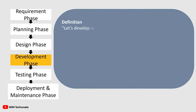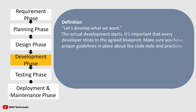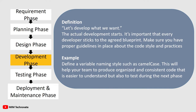Development Phase — Let's develop what we want. At this stage the actual development starts. It's important that every developer sticks to the agreed blueprint. Make sure you have proper guidelines in place about the code style and practices. For example, define a variable naming style such as camel case. This will help your team produce organized and consistent code that is easier to understand and to test during the next phase.